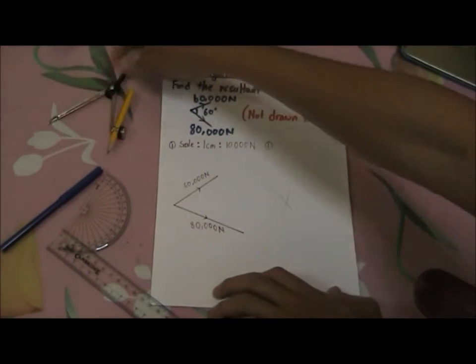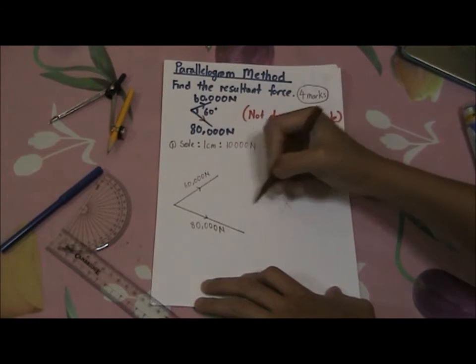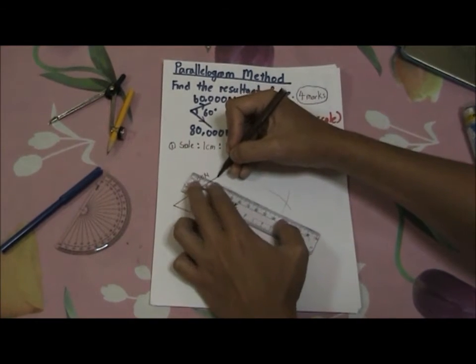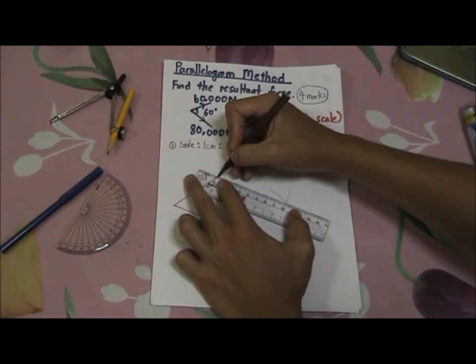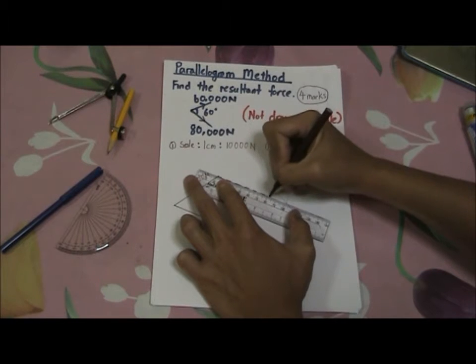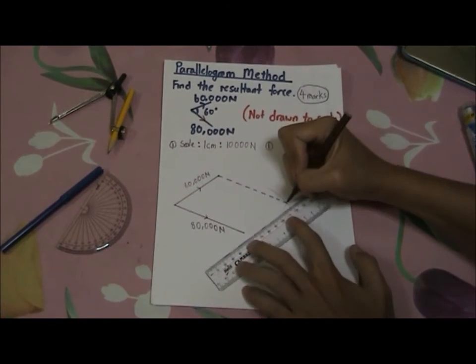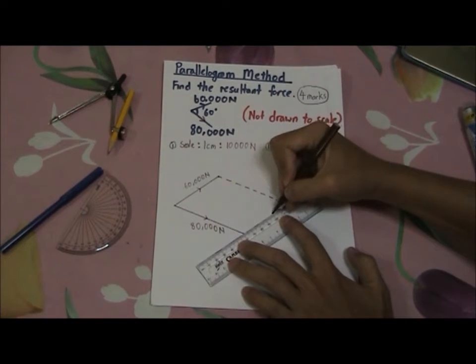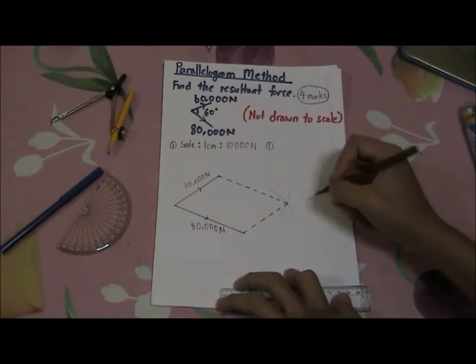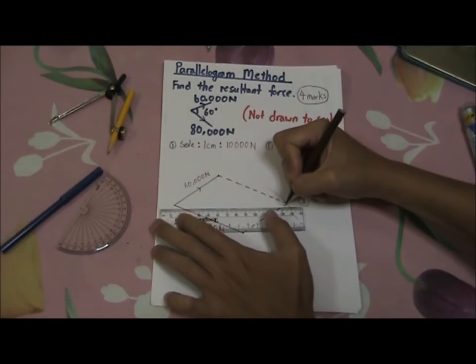The intersection between these two arcs will give you the opposite corner of the parallelogram. So what you need to do is to draw a line to the arc. Please bear in mind that this line is a construction line, so we use dotted line to represent. Same goes for the last line. This is where the second mark will go to. Now draw the resultant force.